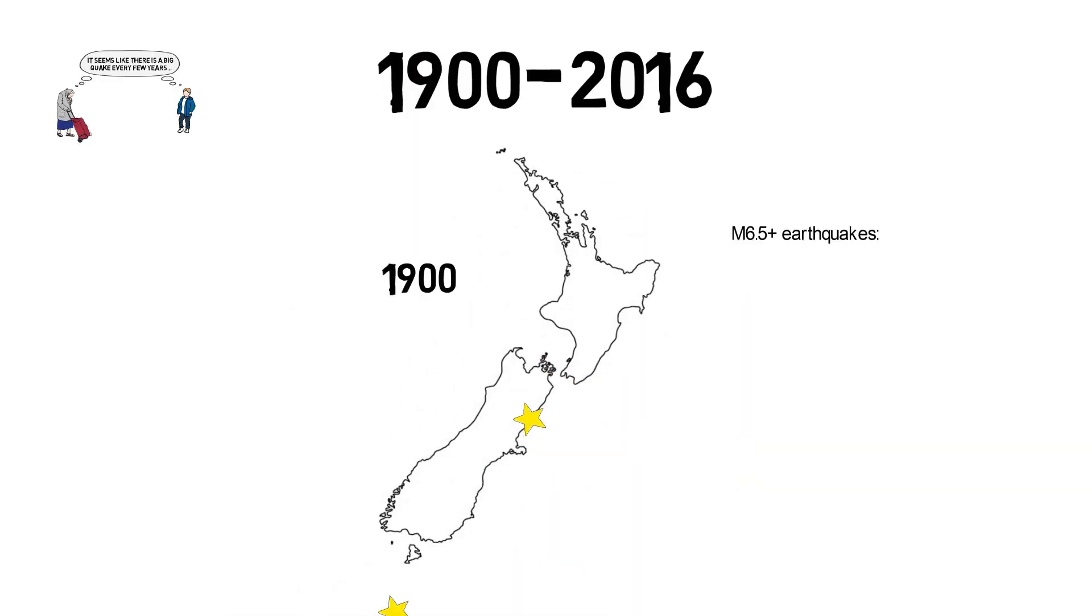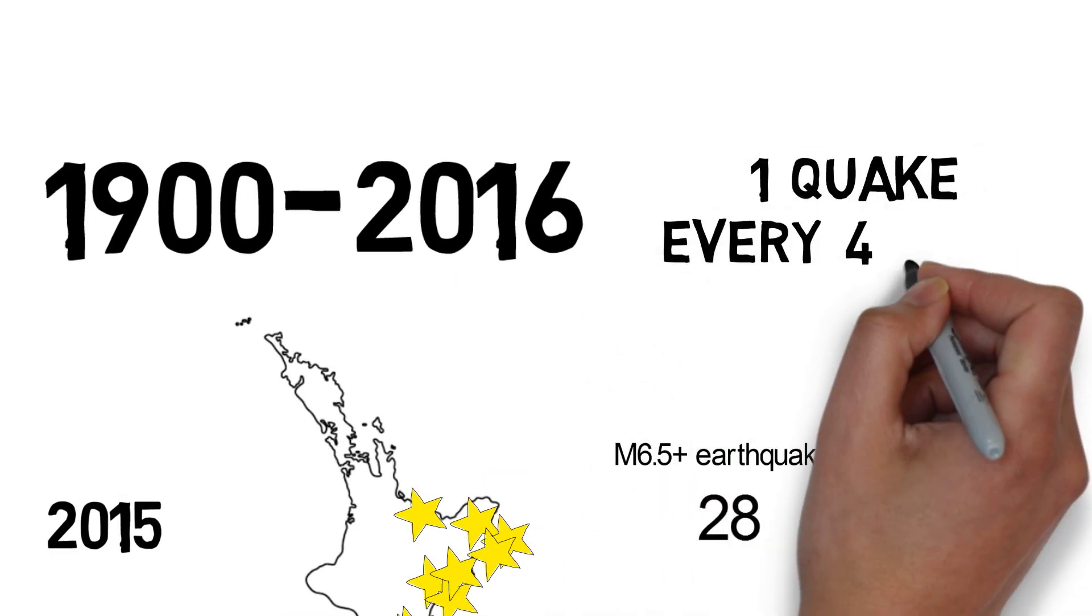If we look at a larger chunk of time, from 1900 until now, large quakes come in fits and starts and the total number of quakes jumps to 28. This works out to one large quake every four years.